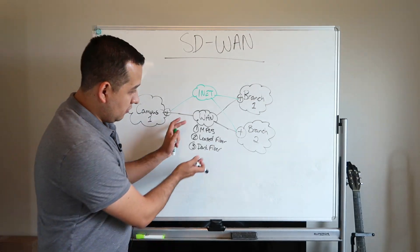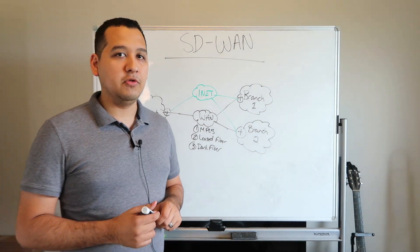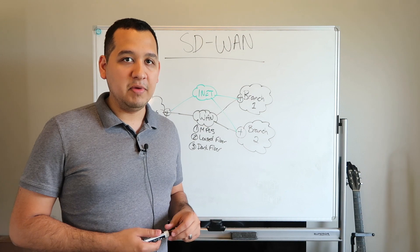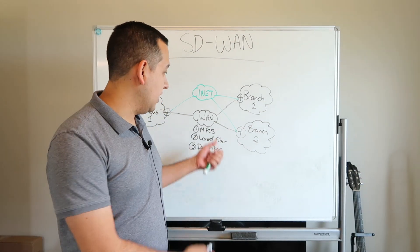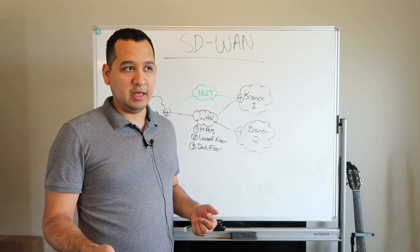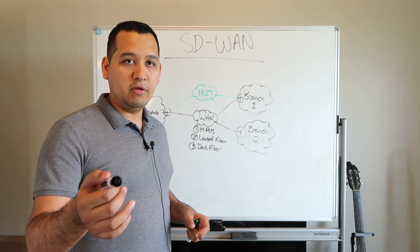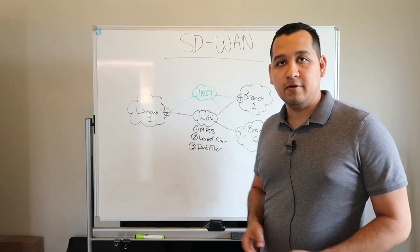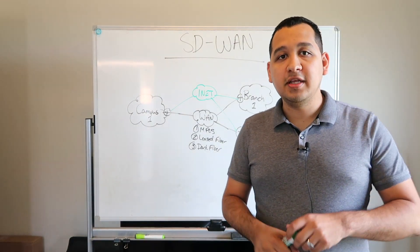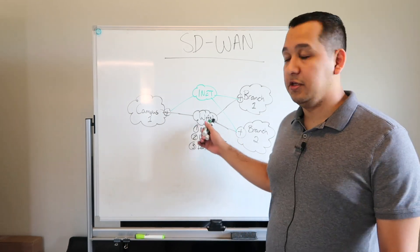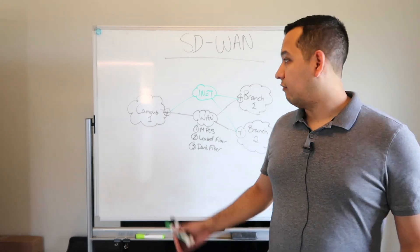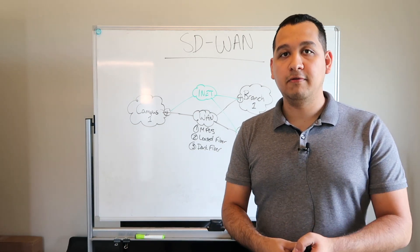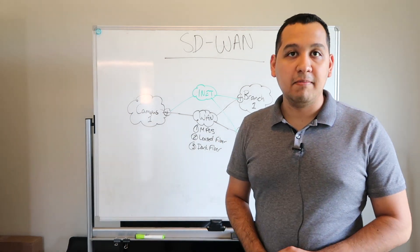MPLS is a service provided through some kind of service provider, and it usually costs money. The larger you need that bandwidth to be — whether 100 meg, 1 gig, or 10 gig over that MPLS link — that's going to cost you money, but it's far more reliable than pushing all your company workloads through the internet. With leased fiber, you are essentially leasing a fiber link from your service provider that runs from your campus to the branch site, and you're leasing that from them. This is slightly more expensive than an MPLS circuit.